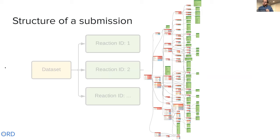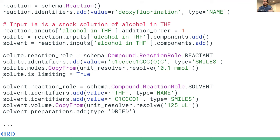The underlying schema is actually very comprehensive. The schema can be used at multiple levels of detail — from a zoomed-out view specifying just the most important things about the reaction, the critical components of what went in, what the conditions were, and what came out, to as much detail as you want when the information is available. Here's an example of how you might specify a set of inputs for a reaction using the Python bindings — very easy to use these protocol buffers programmatically to define things at arbitrary levels of detail.